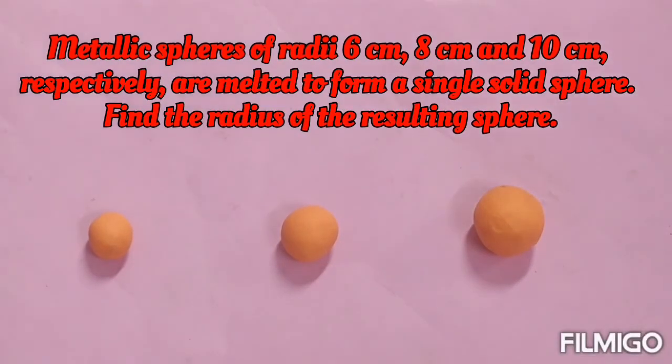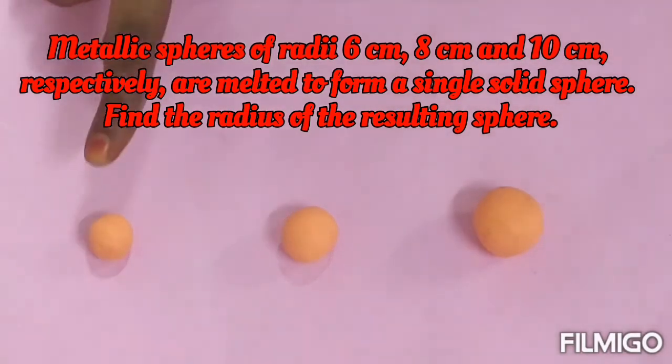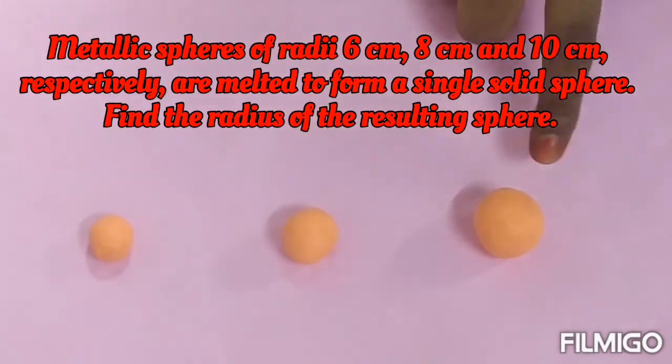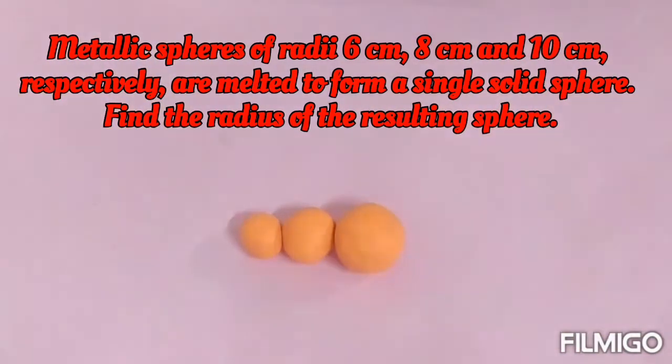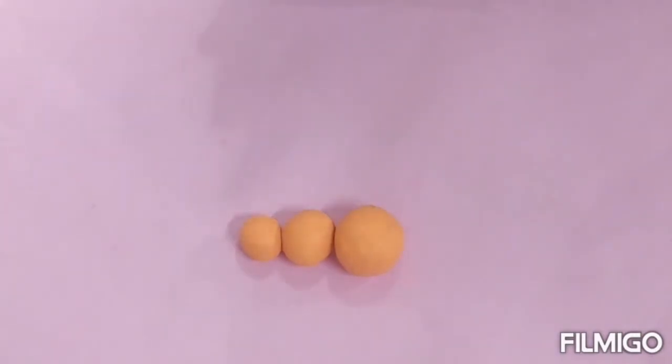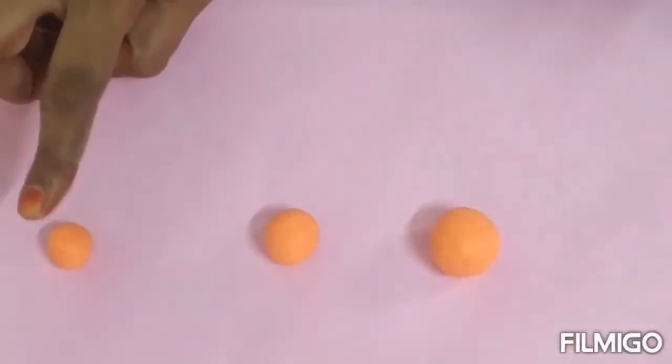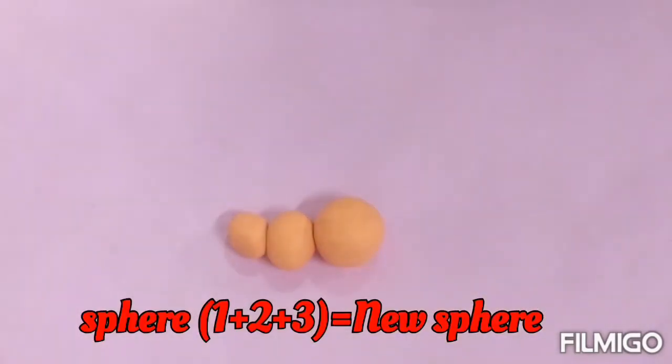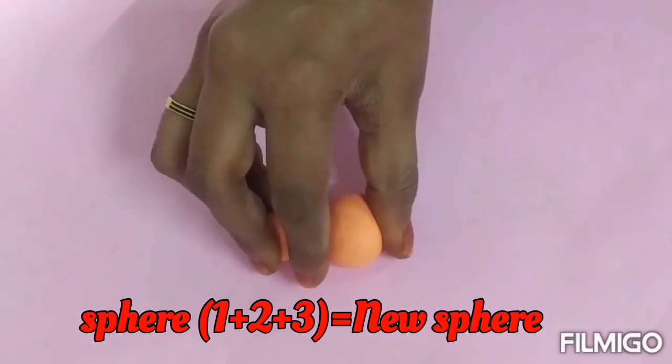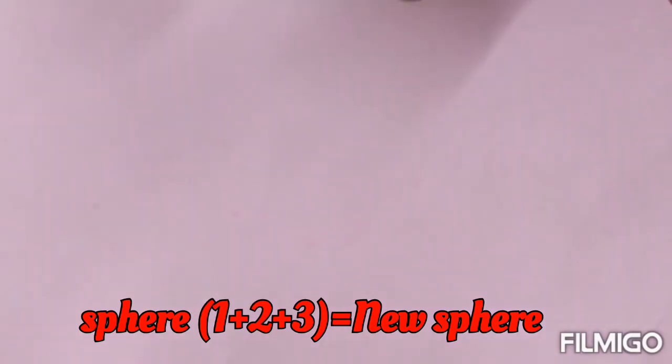Metallic spheres of radii 6 cm, 8 cm, and 10 cm respectively are melted to form a single solid sphere. Find the radius of the resulting sphere. We have three spheres of different radii. We are just going to melt them and form a single solid sphere. The three spheres will be melted and formed into a single solid sphere. Sphere of 6 cm, 8 cm, and 10 cm will be melted and formed into a single sphere. Sphere 1 plus 2 plus 3 will give us a new single sphere. Now what will be the volume of this new sphere?